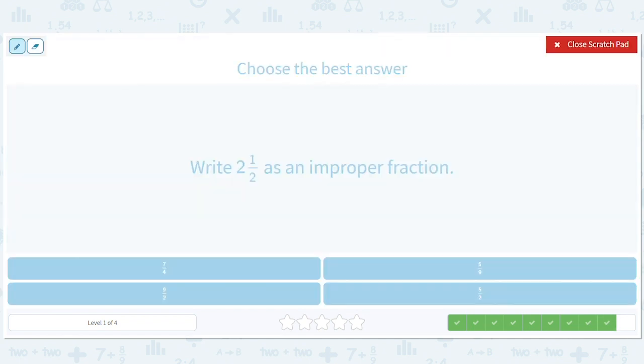Oh, here's a fun one. 2 and a half. All right. So, 2 times 2 plus 1 all over 2 gives us 4 plus 1 over 2 or 5 halves.